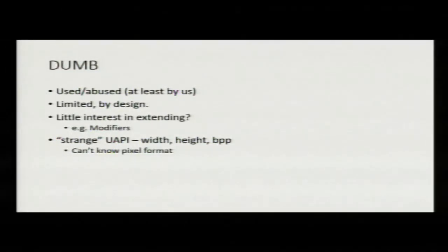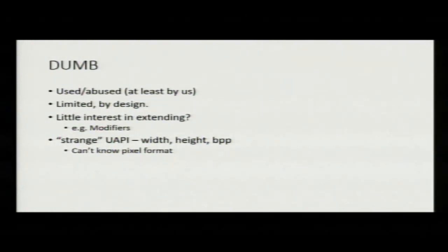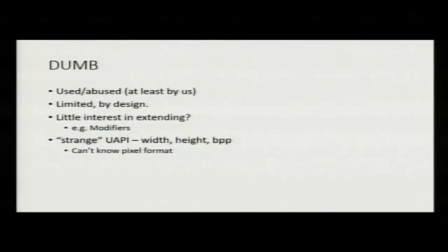In DRM, we have DUMB buffers. We use it for everything, which I guess isn't great. It's pretty limited by design — it's only meant for software rendering. You're not meant to use it for acceleration, and you can't allocate from render nodes. As far as I can tell, there's no interest in extending it to, for instance, add modifiers. The API seems a bit odd in that you don't ask for a format — you just have width, height, and BPP, and it's up to the driver to come up with something suitable.